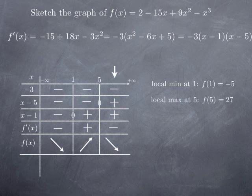And there is a local maximum at 5. To get the value of that maximum, I plug x equals 5 in the original function. So we get 2 minus 75 plus 9 times 25 minus 125. All this adds up to 27. So I can include these values in my chart. I have a local minimum of negative 5 and a local maximum of 27.